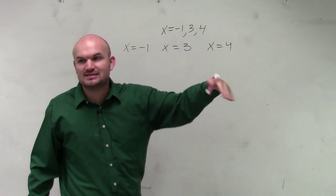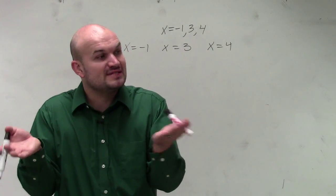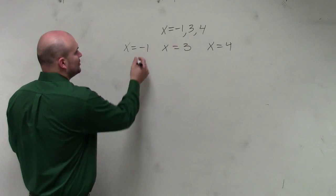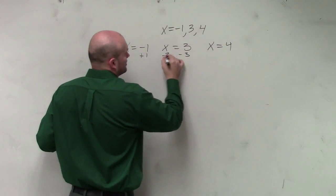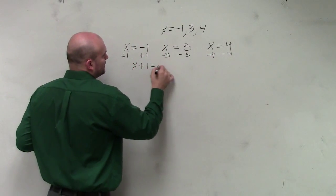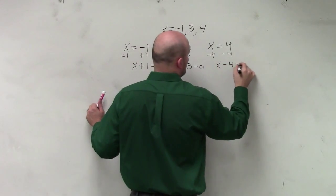However, to write them as a polynomial, we can write all of our solutions or zeros as factors. To write them as factors, we set our factor equal to 0. Therefore, we have x plus 1 equals 0, x minus 3 equals 0, and x minus 4 equals 0.